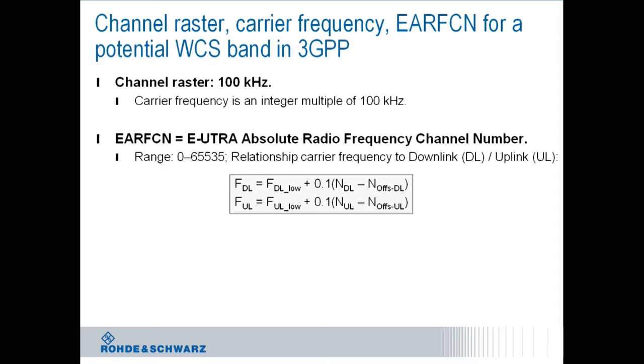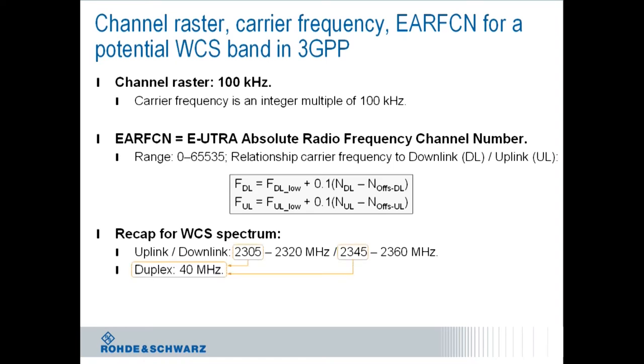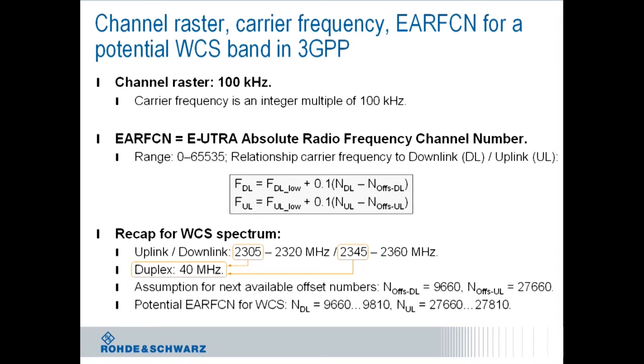If we want to conduct now on the potential channel numbers for the WCS spectrum, we need to recall the frequency range that is shown here for uplink and downlink. With that we also know the duplex distance which is given with 40 megahertz. Looking at the latest 3GPP specification showing the officially supported frequency bands, we could check on the next available channel numbers for downlink and uplink which are 9660 towards 27660. This assumption leads to the conclusion that the potential channel number range for a frequency band in 3GPP that supports the WCS spectrum could be for the downlink 9660 to 9810 and for the uplink 27660 to 27810.